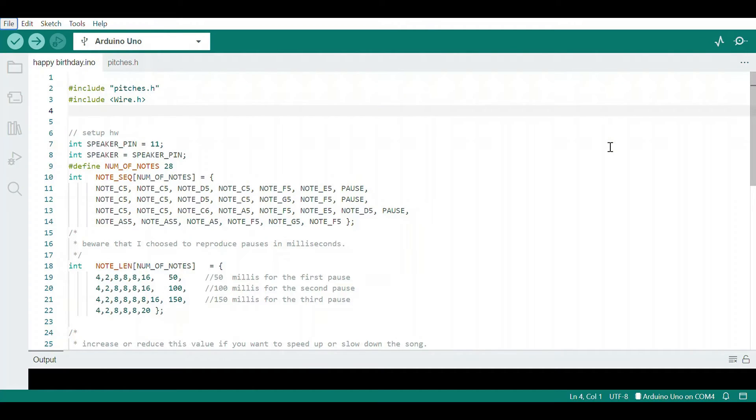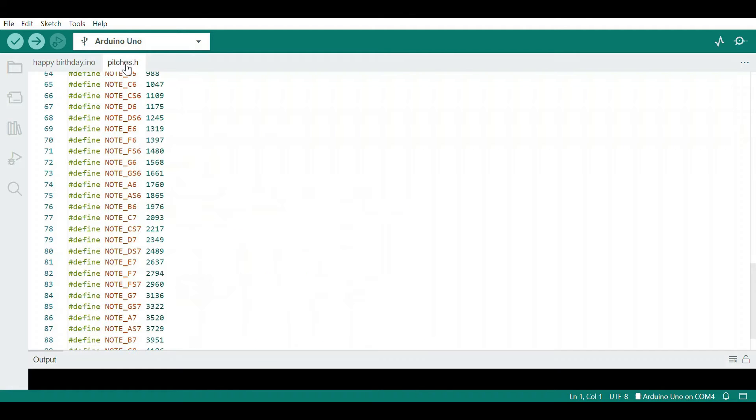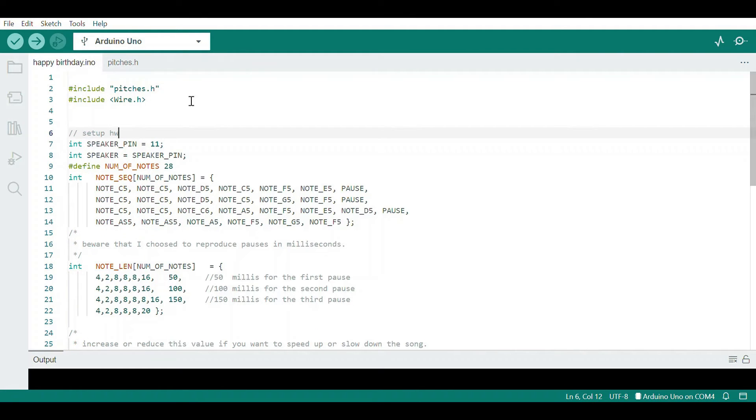Now you have to open the Arduino IDE, then click on file and open the code which I already provided you in the description. Make sure there are two files: one named pitches.h and the second is happyworldday.ino.